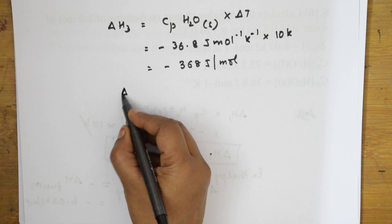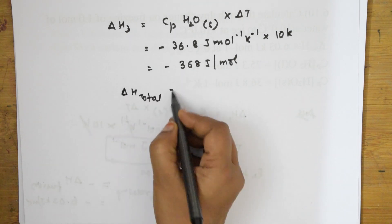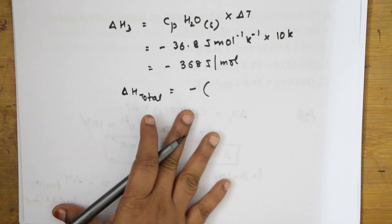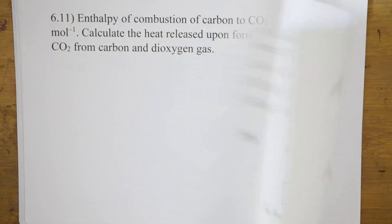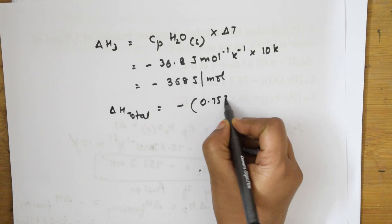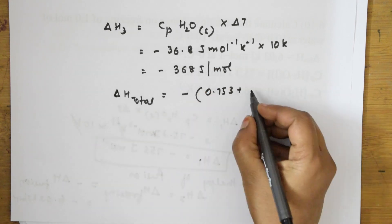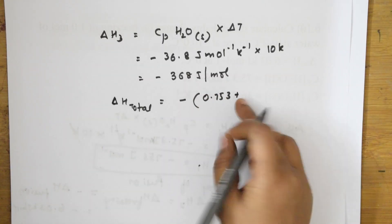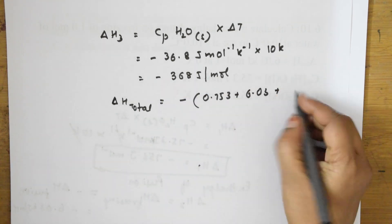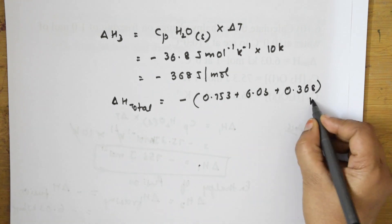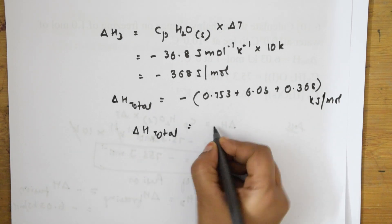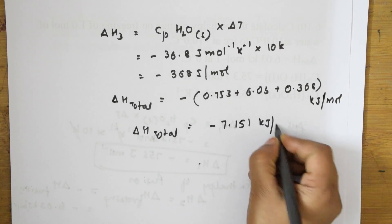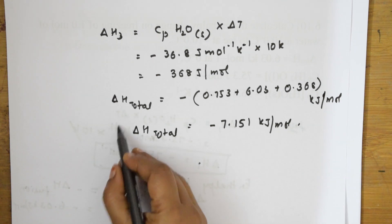Total ΔH = ΔH₁ + ΔH₂ + ΔH₃ = −0.753 + (−6.03) + 0.368 = −7.151 kJ/mol. So the total enthalpy change is −7.151 kJ/mol.